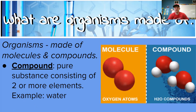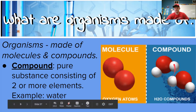Continuing on with what organisms are made of — now we have a compound. A compound is a pure substance consisting of two or more elements. An example is water, as shown in that image. Go ahead and pause.